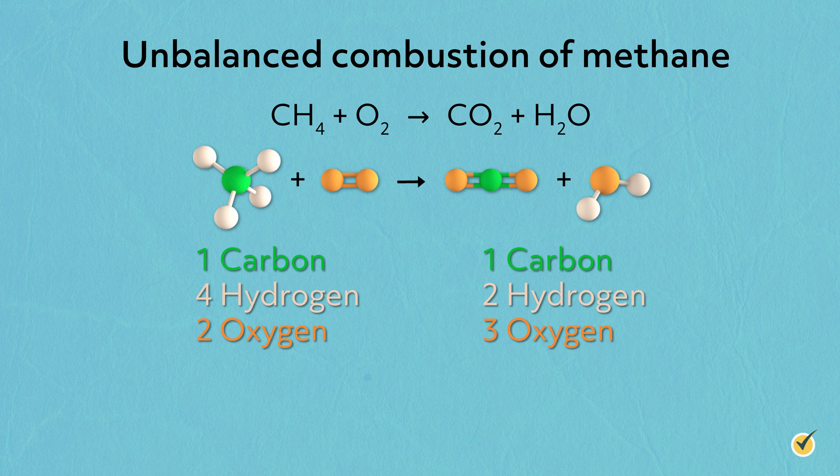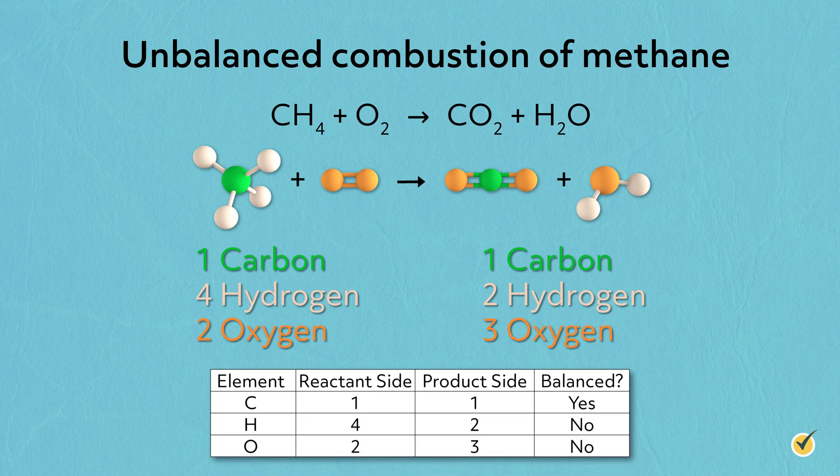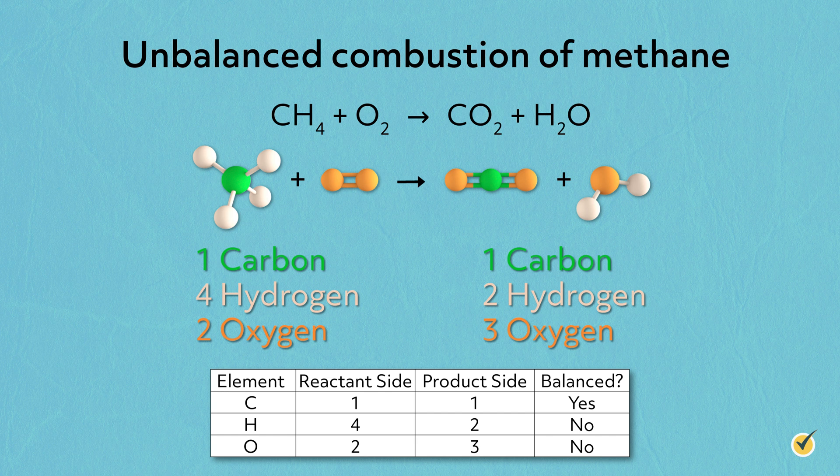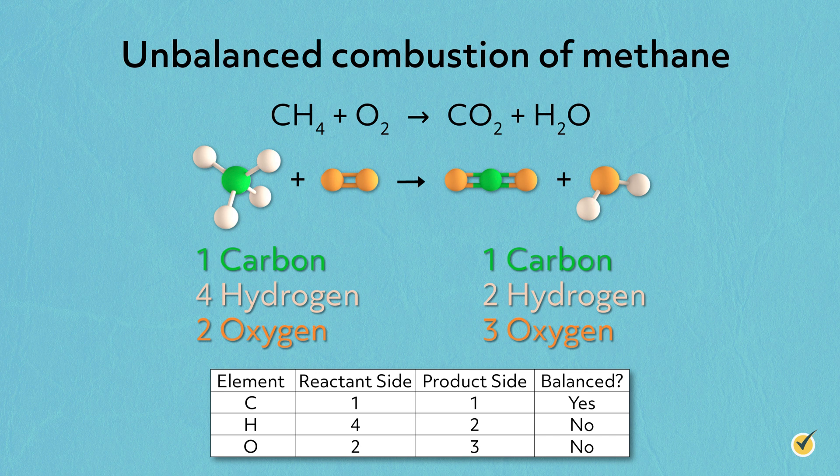It's often helpful to keep track of our atom count in a table. While counting, remember that the subscripts—the 4 in methane, 2 in oxygen, 2 in carbon dioxide, 2 in water—they denote the number of atoms of the element preceding the subscript within the compound. On the reactant side, we have 1 carbon, 4 hydrogen, and 2 oxygen atoms.